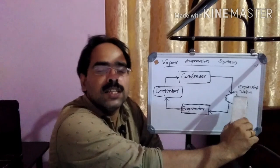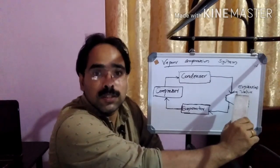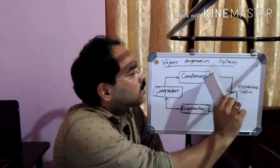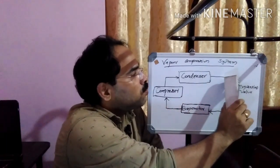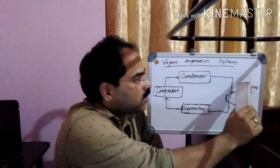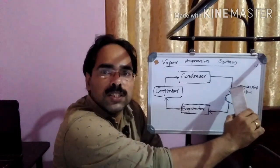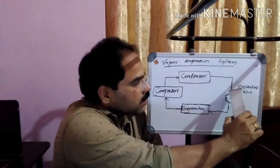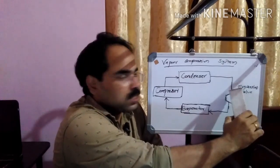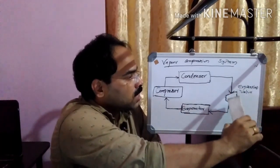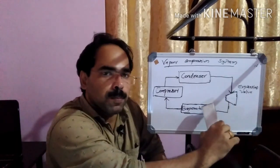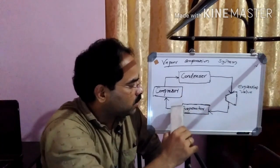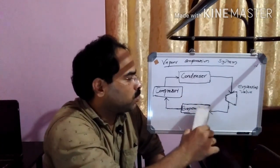The expansion device expands the liquid refrigerant. While moving from the condenser section, that refrigerant will be in the form of liquid state. So that is we are giving into the expansion valve. The expansion valve expands that liquid refrigerant. After expansion, that liquid refrigerant we are giving into the evaporator. So again that liquid refrigerant can convert into vapor by absorbing the heat from the room.